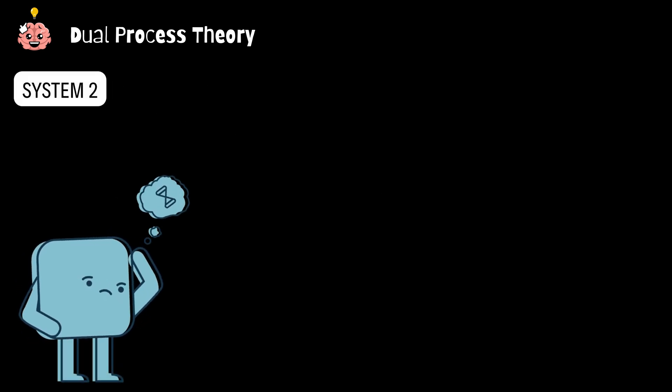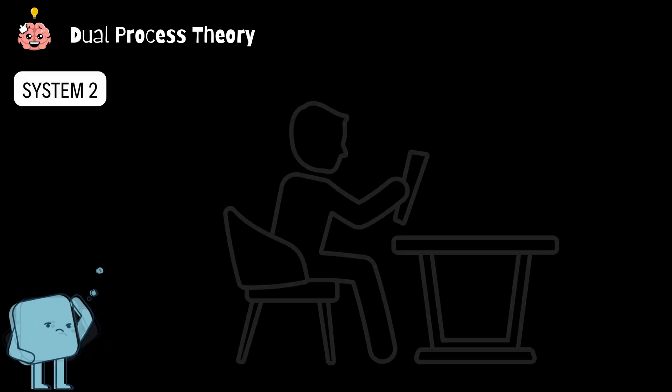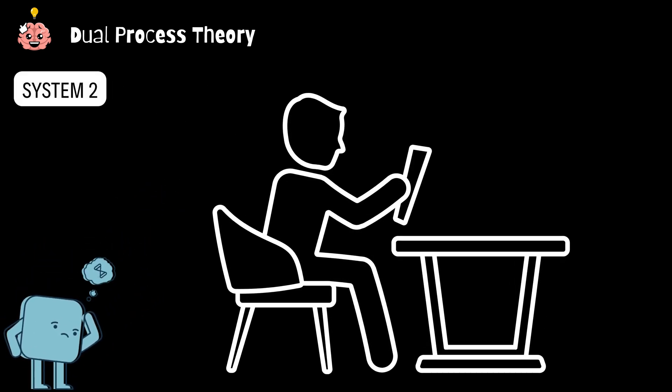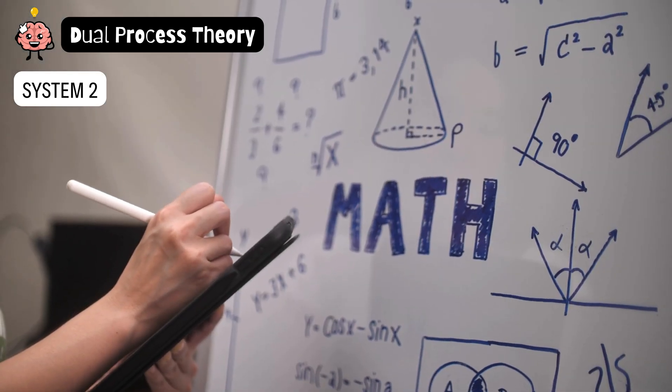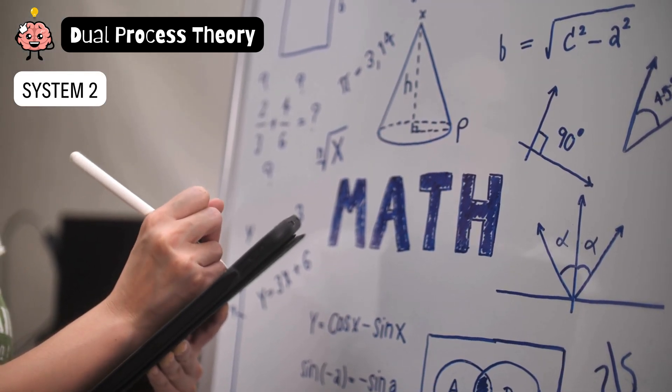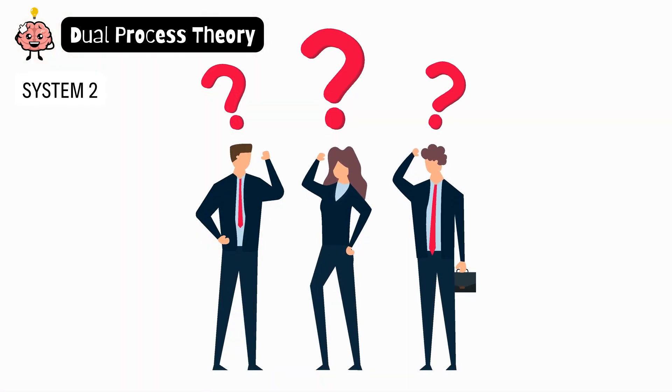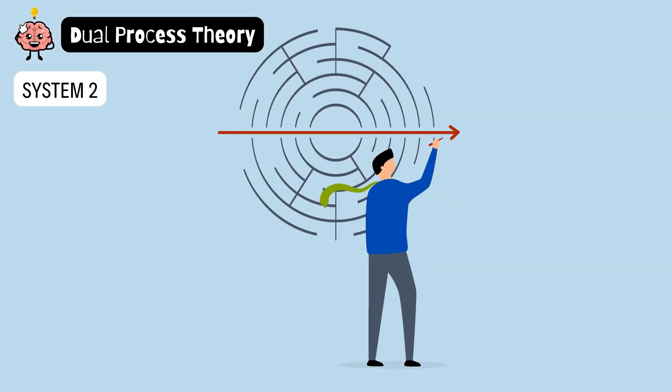Now let's talk about system two. This one's slower, more deliberate, and actually thinks things through, like the careful friend who reads the entire menu before deciding on a salad. You use system two when you're solving a complex math problem or making life decisions like planning your next career move. It's logical, but takes its sweet time.